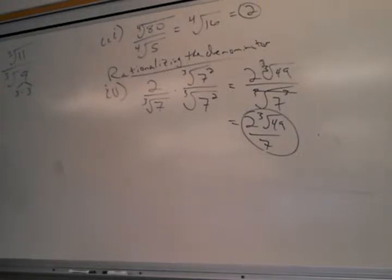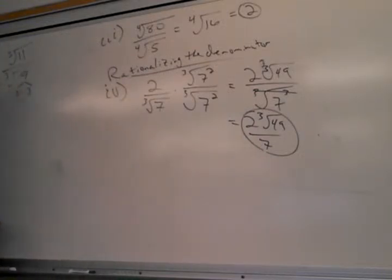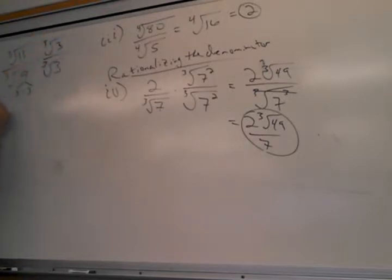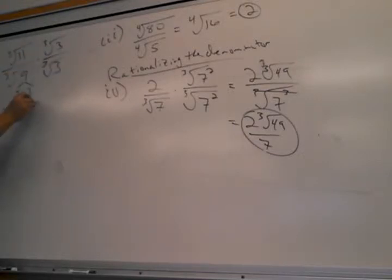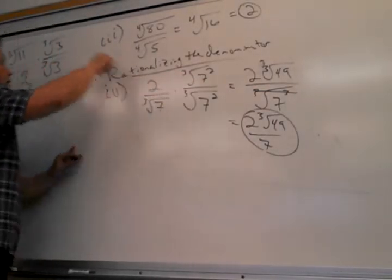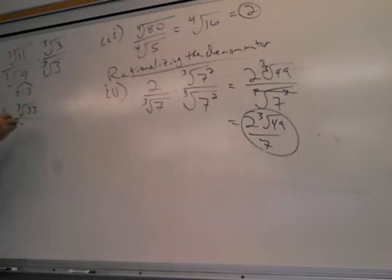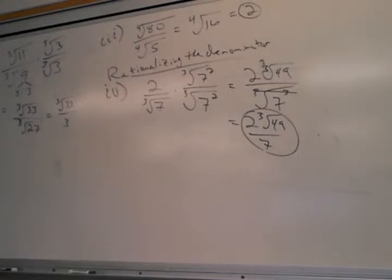Let's try the cube root of 11 over the cube root of 9. The denominator has a cube root and 9 is 3 times 3 — so it already has two 3s. A cube root needs three 3s, so it needs one more 3. I multiply top and bottom by the cube root of 3. On top I get the cube root of 33. On the bottom, 9 times 3 is 27, and the cube root of 27 is 3. So the answer is the cube root of 33 over 3.